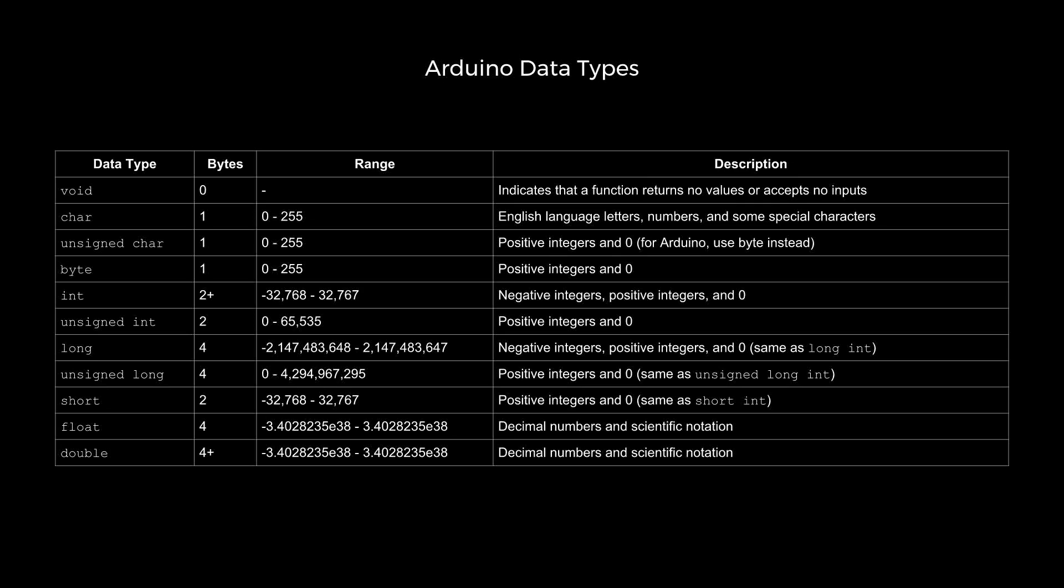Note that some of the data types can take up more bytes than what's listed, depending on the platform you're using. For example, int only takes up two bytes on the Arduino Uno and Redboard, but takes up four bytes on 32-bit systems like the Due and SAMD-based boards. For now, we'll assume that we're using an Arduino Uno or Redboard.